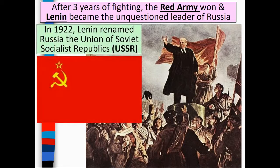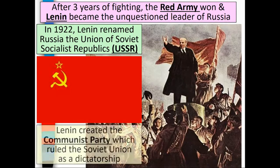In 1922, Lenin renamed Russia the Union of Soviet Socialist Republics, the USSR. Lenin created the Communist Party, which ruled the Soviet Union as a dictatorship.